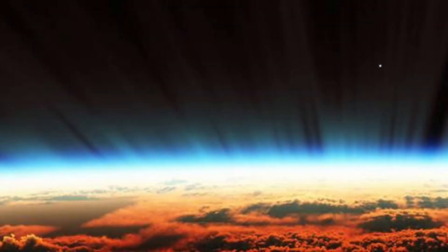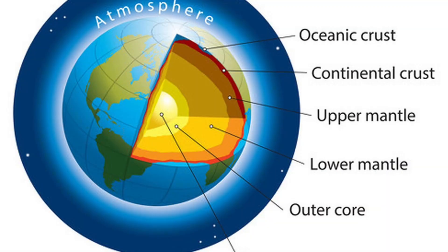Atmosphere formation: as Earth cooled, its atmosphere began to form. Early Earth's atmosphere was composed primarily of water vapor, carbon dioxide, nitrogen, and smaller amounts of other gases.